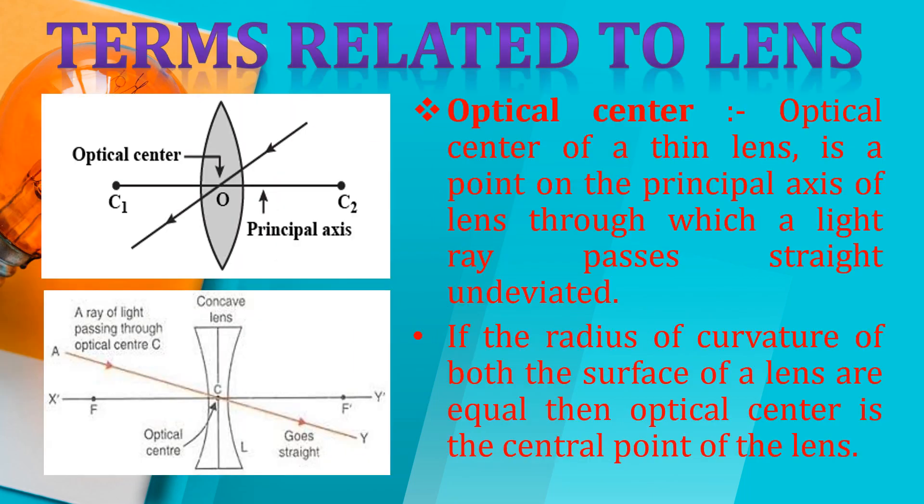Next, the center of curvature. I have told you that there are two principal focuses and two centers of curvature. Some books based on NCERT consider the centers of curvature as C1 and C2. But there are some books in which we consider two focuses as F1 and F2. Both notations are used. We consider the focuses as F1 and F2, and the two centers of curvature as C1 and C2. The point O is the optical center, and the long line passing through is called the principal axis.